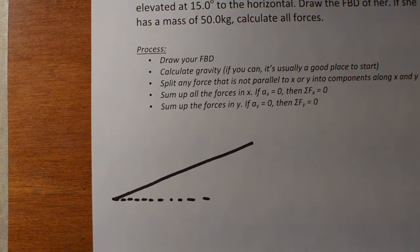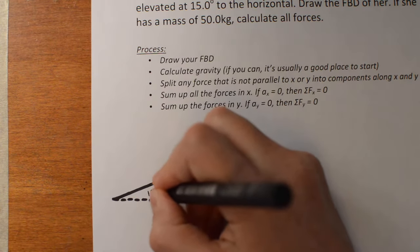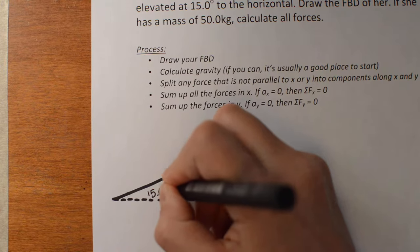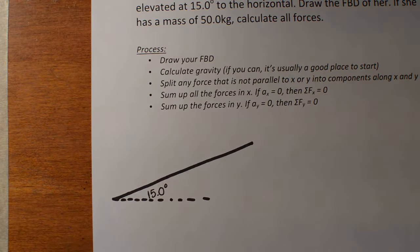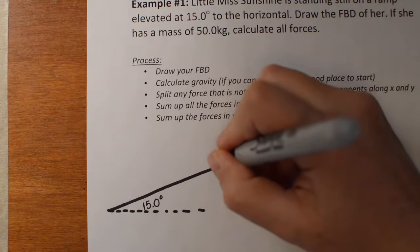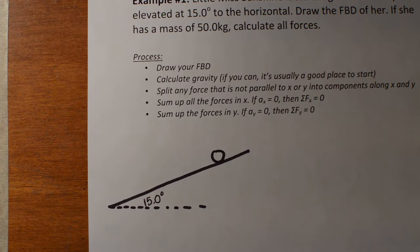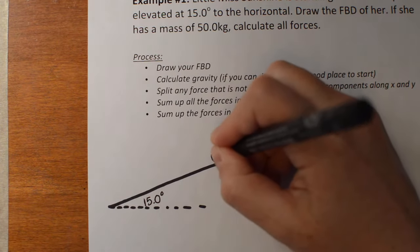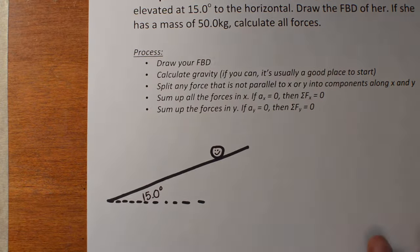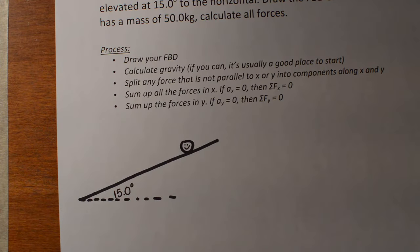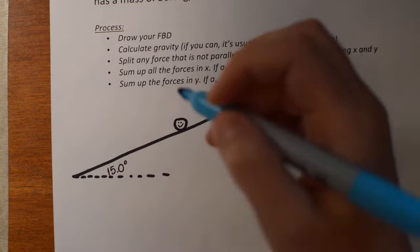This ramp is at 15 degrees, so this is a 15.0 degree angle in there, and we have Little Miss Sunshine standing here on the ramp — there she is, maybe with a little smiley face. She has a mass of 50 kilograms, and we want to draw her free body diagram, which means we want to draw all the forces she feels.